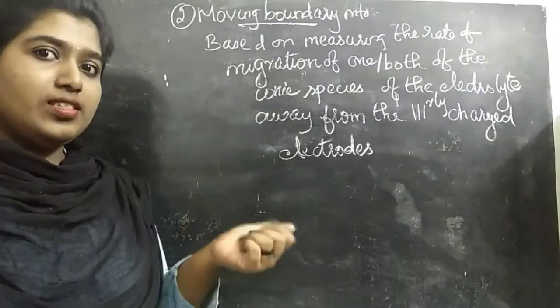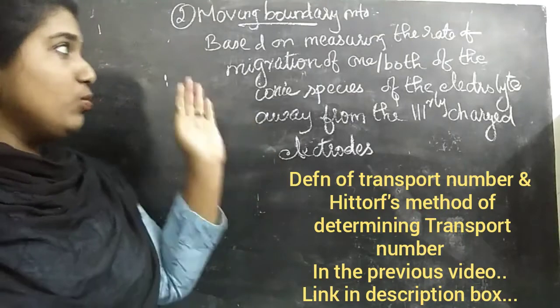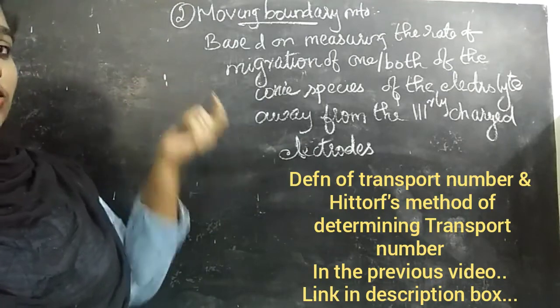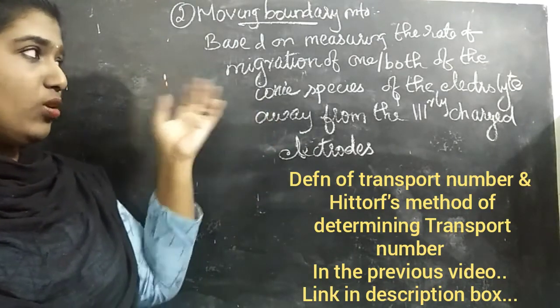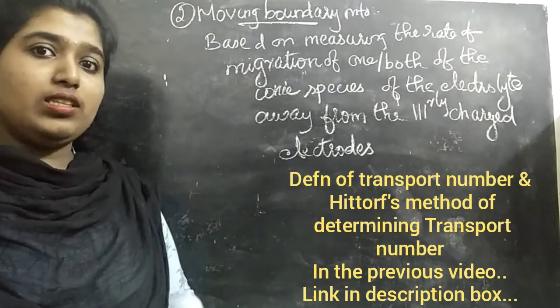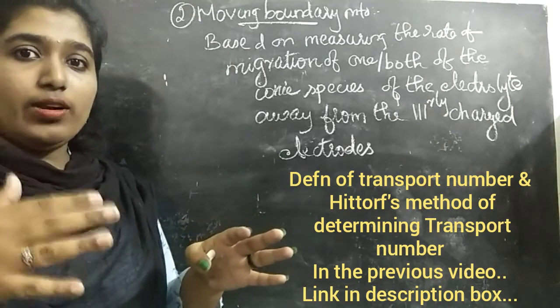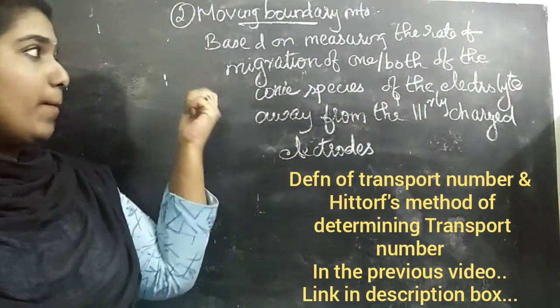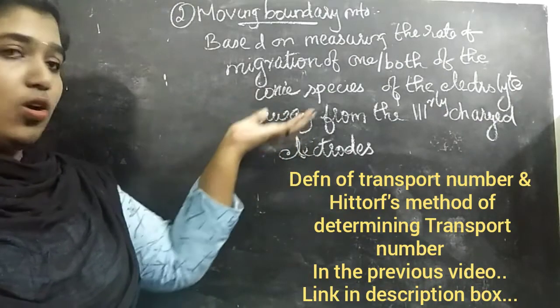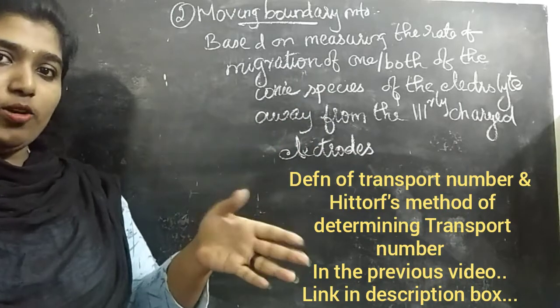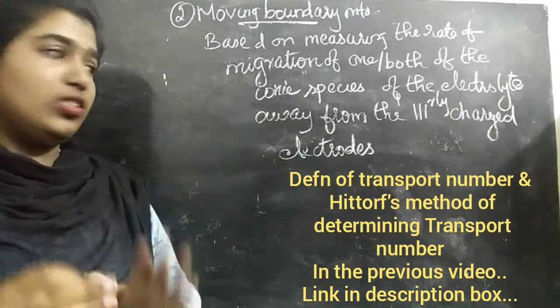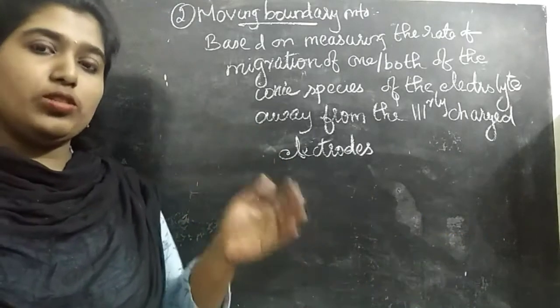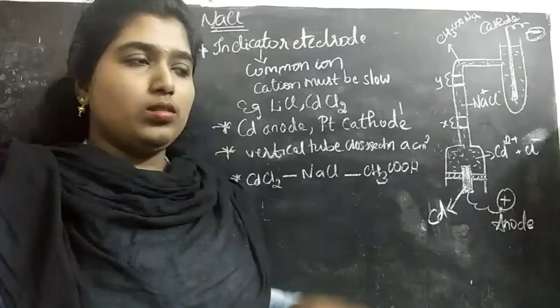The second interesting experiment for determining the transport number is moving boundary method. The principle is based on the measurement of rate of migration of the ionic species. We consider only the rate of migration of one or both ionic species of the electrolyte, that is, cation or anion, or both, away from the similarly charged electrode. That is, the movement of an anion away from the cathode and the movement of a cation away from the anode.